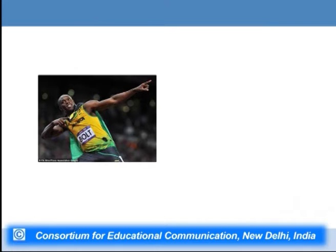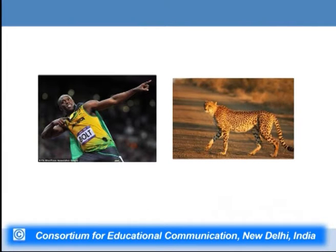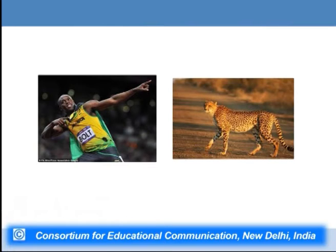What about comparing Usain Bolt, known for the fastest speed on earth at present, with the cheetah, known as the fastest animal on earth? Though both run very fast, just by looking at them we can say these individuals are not of the same species — they share one character, running fast, but other morphological or anatomical features are very different. Notably, the cheetah moves on four legs whereas the human species moves on two legs. So just by looking at animals of different species we can conclude whether they belong to the same or different species.